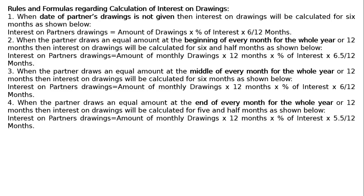The fourth rule: when the partner draws an equal amount at the end of every month for the whole year or 12 months, then interest on drawings will be calculated for 5 and half months. Interest on partner's drawings equals amount of monthly drawings multiplied by 12 months multiplied by percentage of interest multiplied by 5.5 upon 12 months.